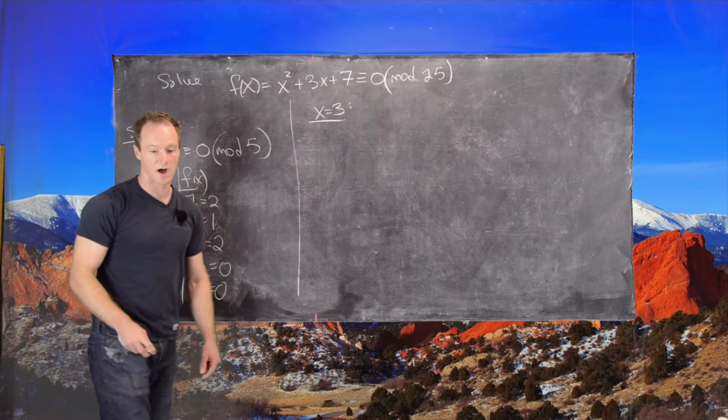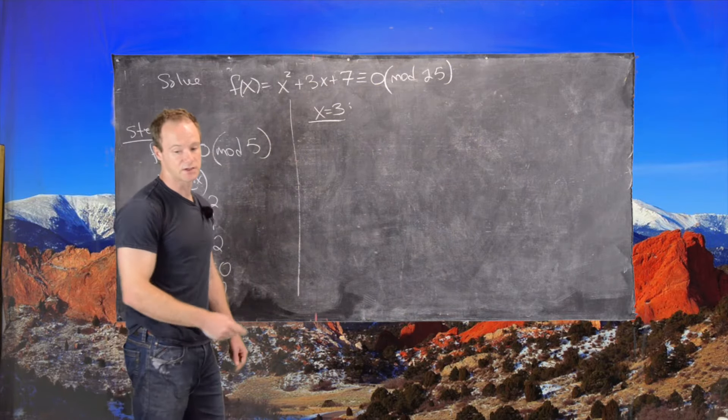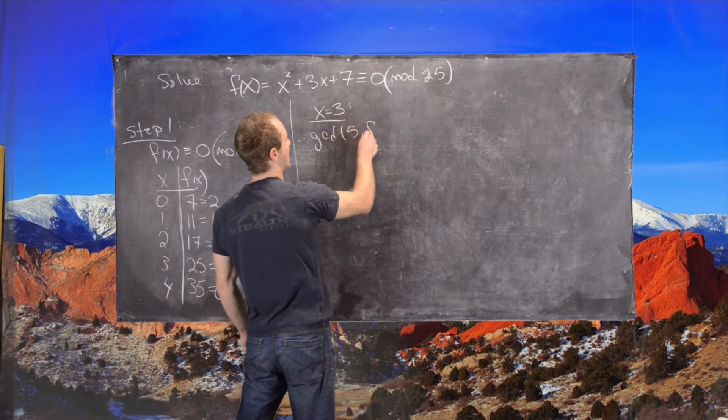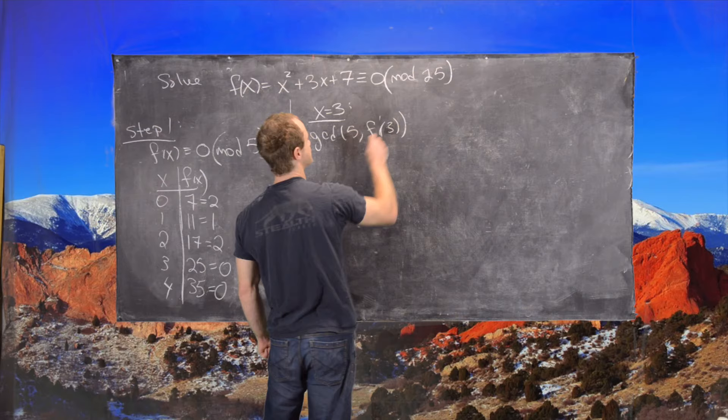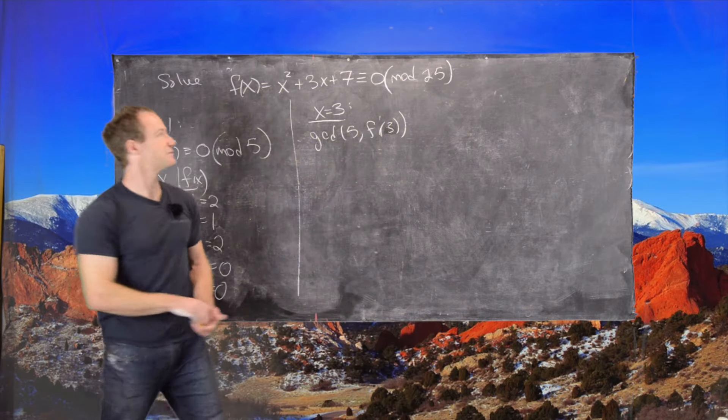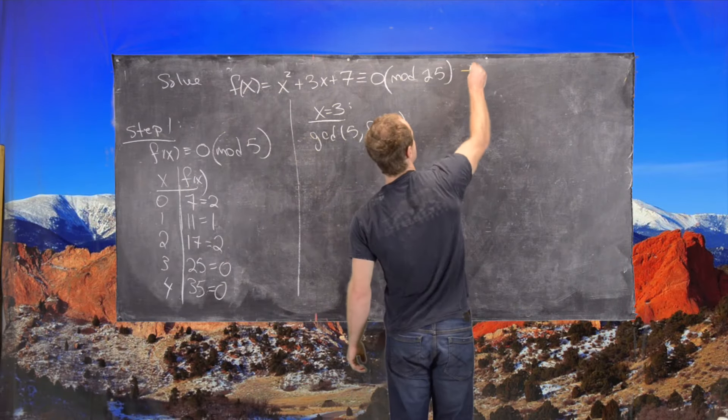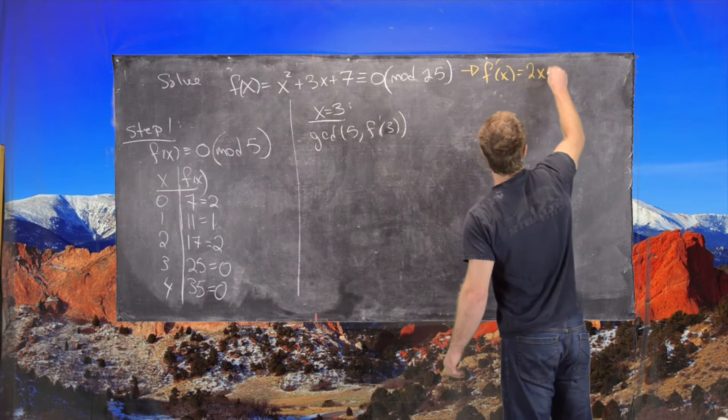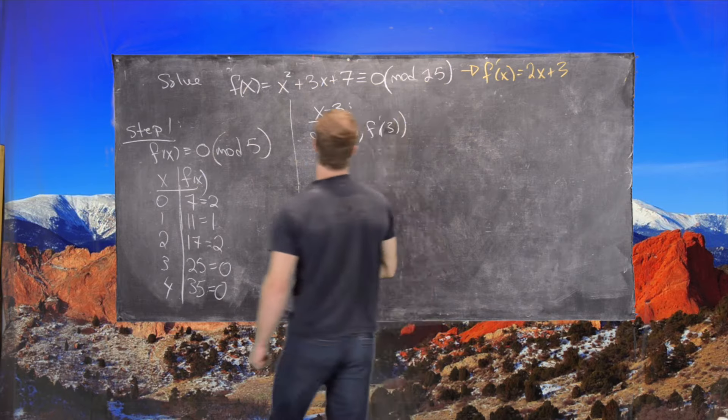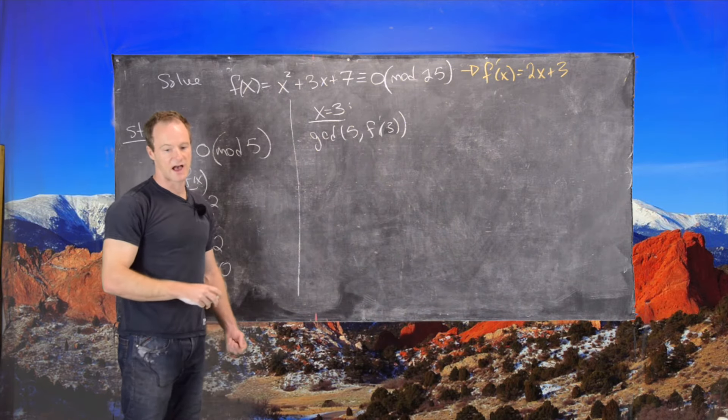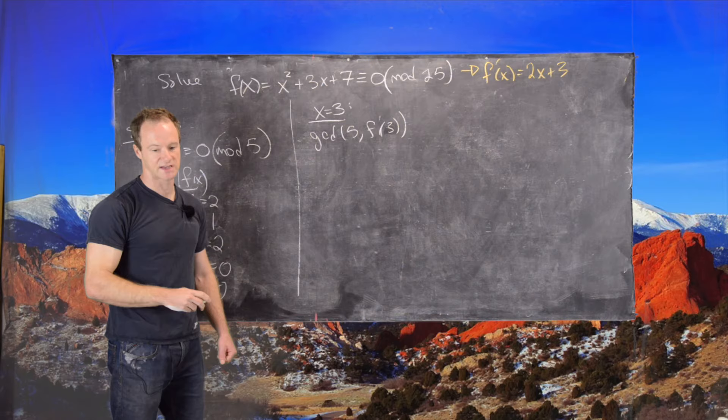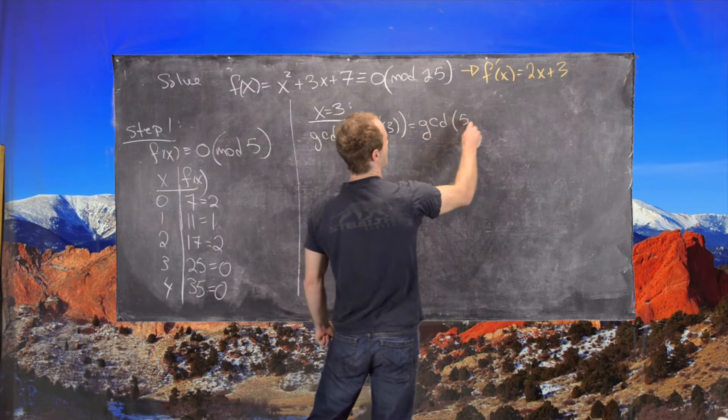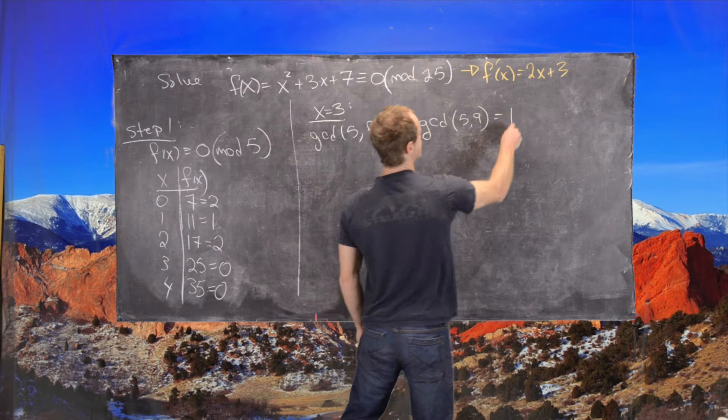And so we know our new solution, well first of all, what we need to look at is the GCD of 5 and f prime of 3. And so first, maybe we should calculate that f prime of x is equal to 2x plus 3. So that means the GCD of 5 and f prime of x is the same thing as the GCD of 5 and 9, which is equal to 1.